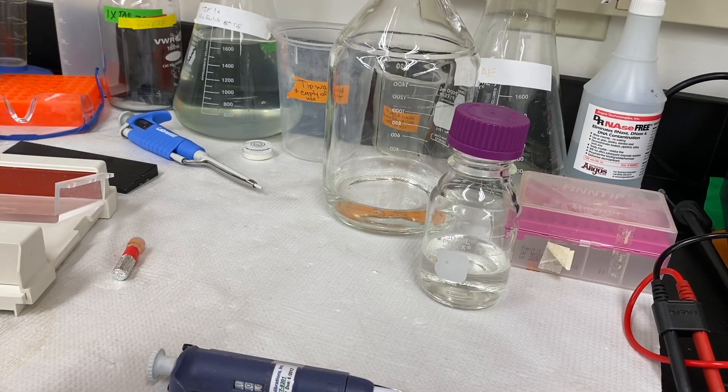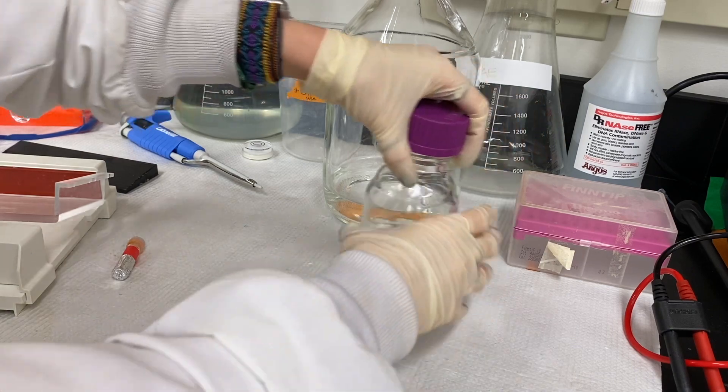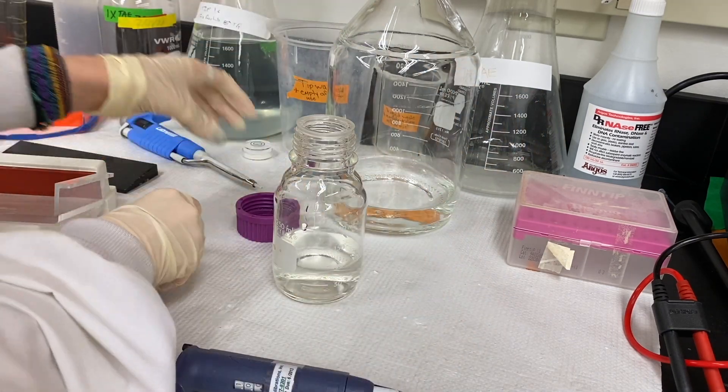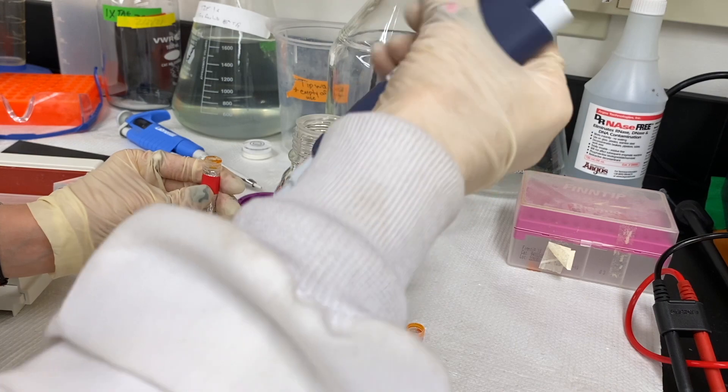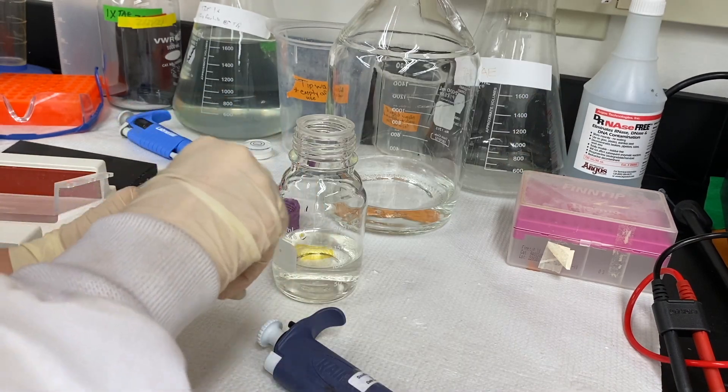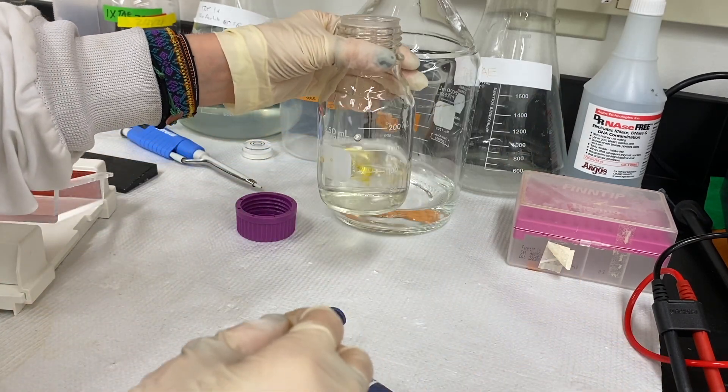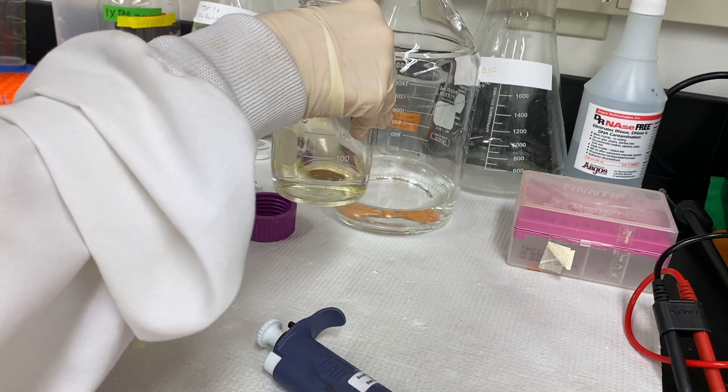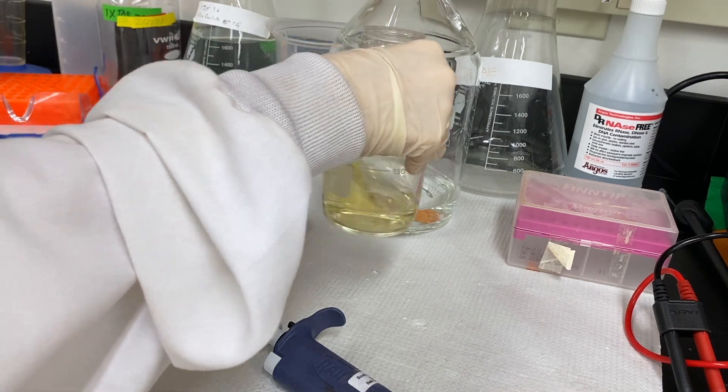It is then left on the counter to cool down for a few minutes before I add a fluorescent dye that will allow the DNA to be visible once they are added to the gel. The dye is covered in tin foil because fluorescence is sensitive to light, so for the remainder of this project, I'm going to make sure to cover the gel with tin foil whenever I can.